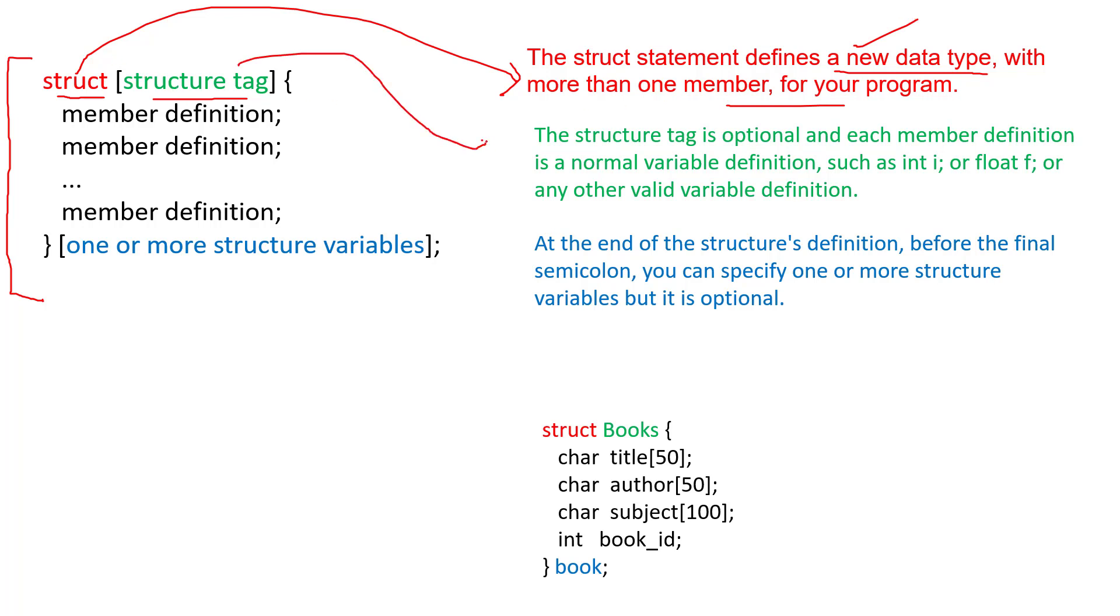The structure tag is optional because it's just a name to indicate the structure. Each member definition is a normal variable definition: integer, float, or any other valid variable definition inside this. After giving struct and the name, you should define all the members—integer, float, character, anything inside the curly braces.